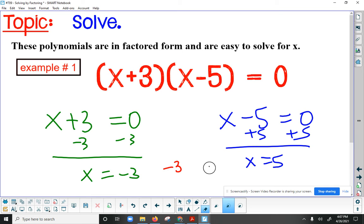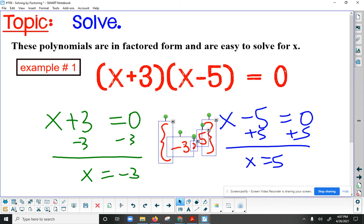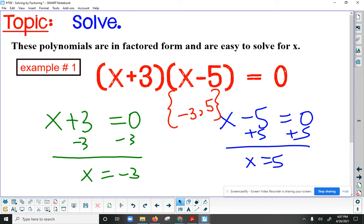Now when we have more than one answer, we typically separate them with a comma, and then we put these fancy curly braces around it. You could leave it like that, or you could say x is equal to either negative three or positive five.